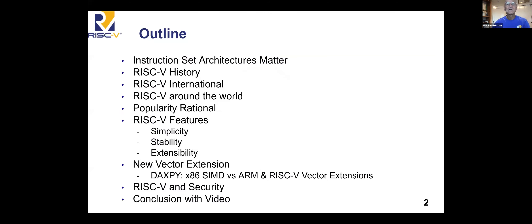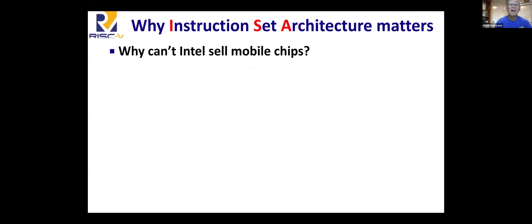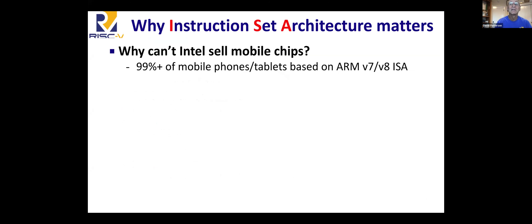So, why does instruction set matter? Why can't Intel x86 architectures be in mobile chips? That's a huge market — Intel would love to be in that one. It's because virtually 100% of those phones use the ARM instruction set architecture, not Intel. And why have ARM partners so far had minor impact on servers? Almost 100% of the servers are based on the 64-bit Intel instruction set — the x86 instruction set that AMD also uses.